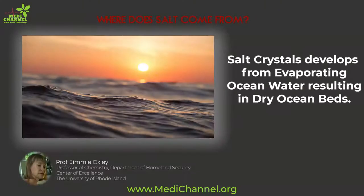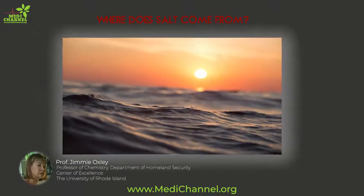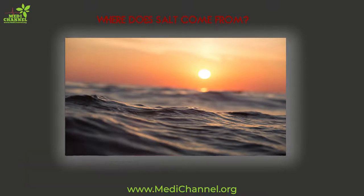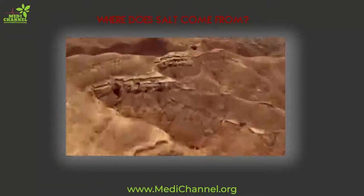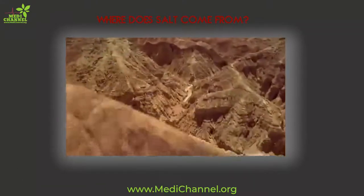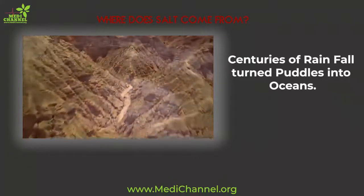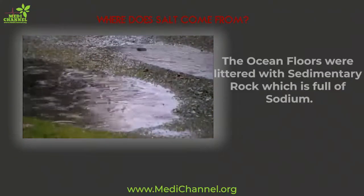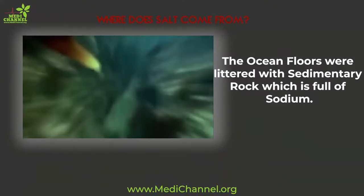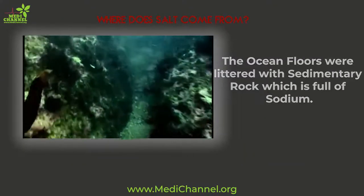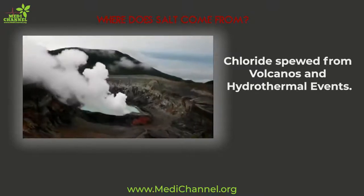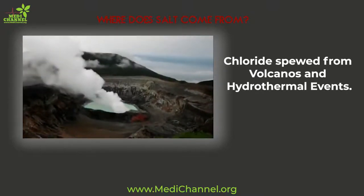So where does salt come from? Salt crystals develop from evaporating saltwater — ocean water from dried ocean beds. This looks like a dried ocean bed, doesn't it? Many millions of years ago, after the earth's surface cooled, centuries of rainfall turned puddles into oceans. The ocean floors were littered with sedimentary rock, which is full of sodium, while chloride spewed from volcanoes and hydrothermal vents.